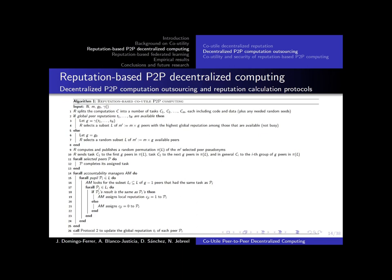Then R selects a number of peers with the highest reputation among those that are available. In case we don't have these reputations available, we just choose a random set of peers. M times G is the number of tasks times the minimum replicas for each task we want. Next, R computes and publishes a random permutation of these tasks and assigns it to available peers. Once the peers have completed their task, they submit their results. Next, the accountability managers — each of them responsible for a set of peers — check the results submitted by the peers they are in charge of and the peers that had the same task.